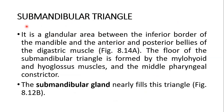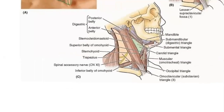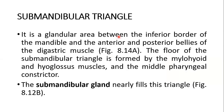The submandibular triangle is a glandular area — it contains the submandibular gland in it. It is between the inferior border of the mandible and the anterior and posterior bellies of the digastric. The floor is formed by the mylohyoid, hyoglossus, and the middle pharyngeal constrictor. The submandibular gland almost fills this triangle. You can see the boundaries in this picture — this is the submandibular triangle. This is the base of the mandible, and you see the anterior and posterior bellies of the digastric forming the submandibular triangle.